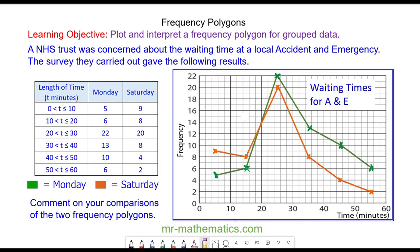As with all charts, we need to give it a title, which we've called waiting times for accident and emergency. Do you want to try and use the frequency polygons to compare the waiting times for Monday and Saturday? Overall, we can see the waiting time for Saturday was less than Monday. This is evidenced by the higher frequency at 5 minutes and the lower frequency of longer waiting times. Thank you for watching and take care.